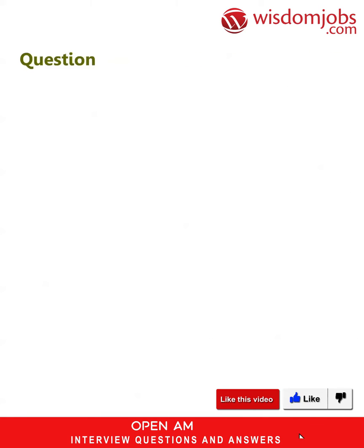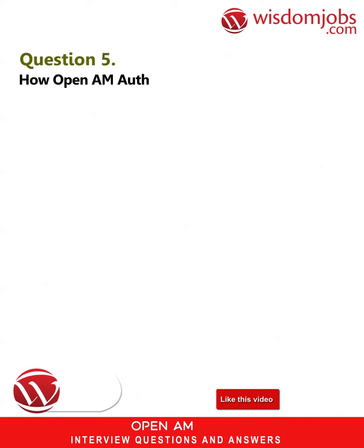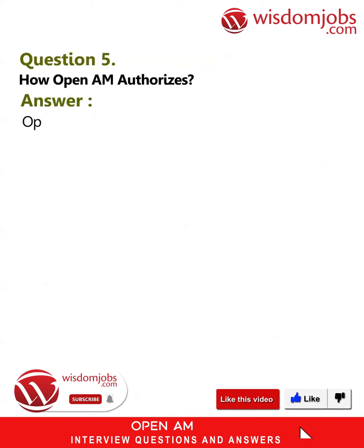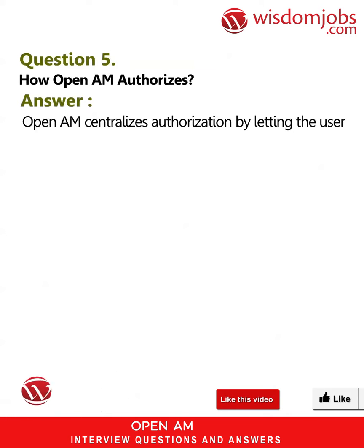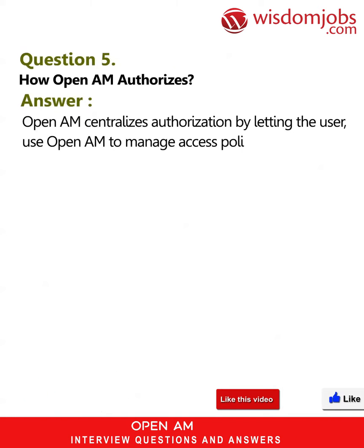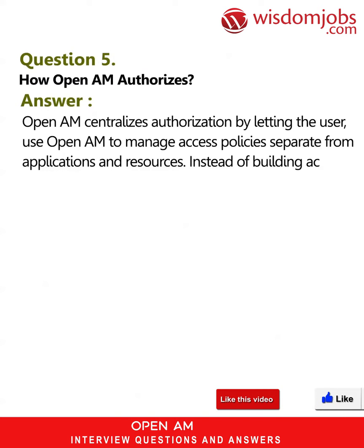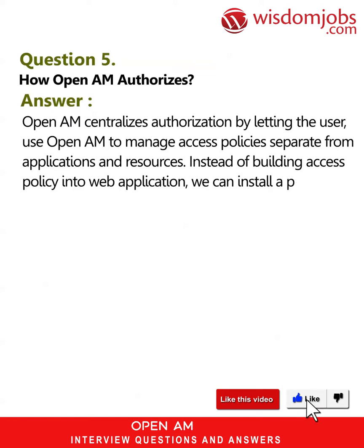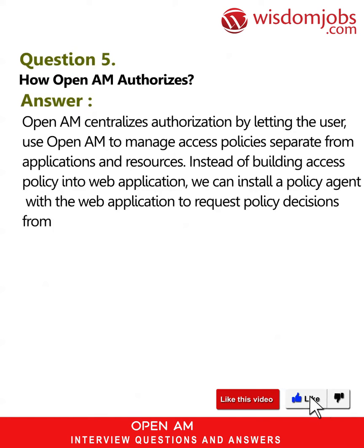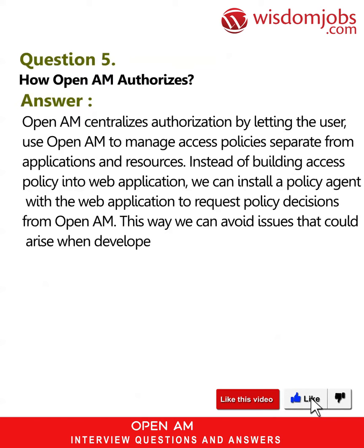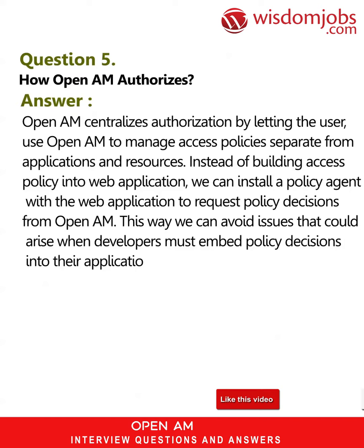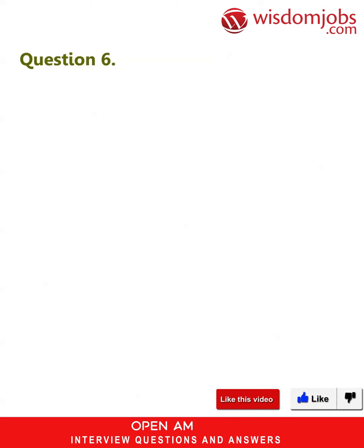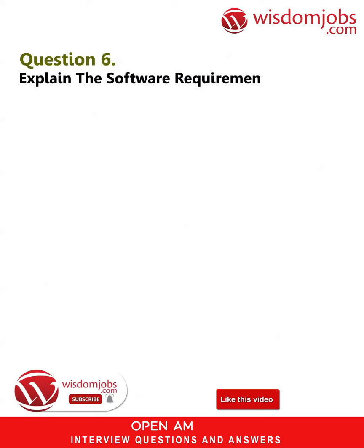Question 5: How does OpenAM authorize? Answer: OpenAM centralizes authorization by letting you manage access policies separate from applications and resources. Instead of building access policy into a web application, you can install a policy agent with the web application to request policy decisions from OpenAM. This way, we can avoid issues that arise when developers must embed policy decisions into their applications.